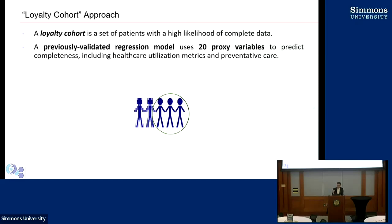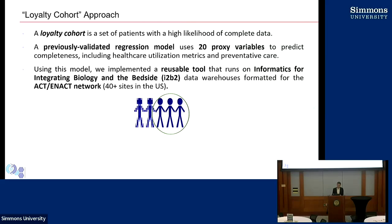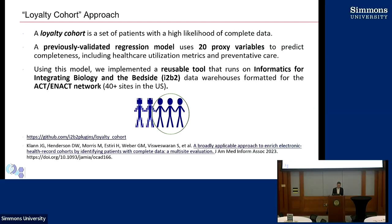There was work done by a researcher named Josh Lin who validated at two sites a regression model using 20 proxy variables that predict whether a patient is loyal to the health care system, focused on health care utilization and primary care metrics. We implemented this tool as a SQL script that runs on your I2B2 data warehouse, and it runs at any site that uses ENACT. The paths can be modified for any ontology, but the default we ship is for the ENACT ontology. It's available on GitHub as part of the I2B2 digital twin package.